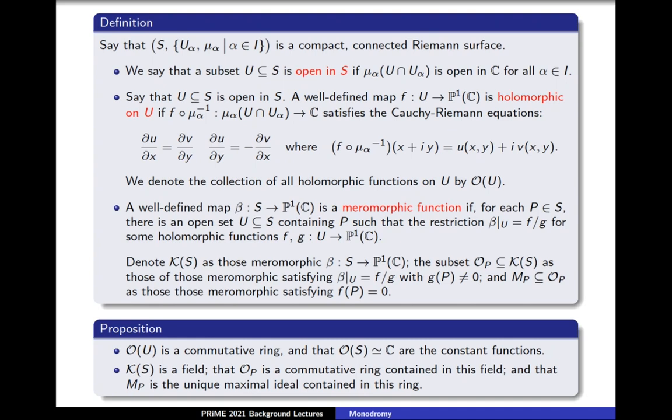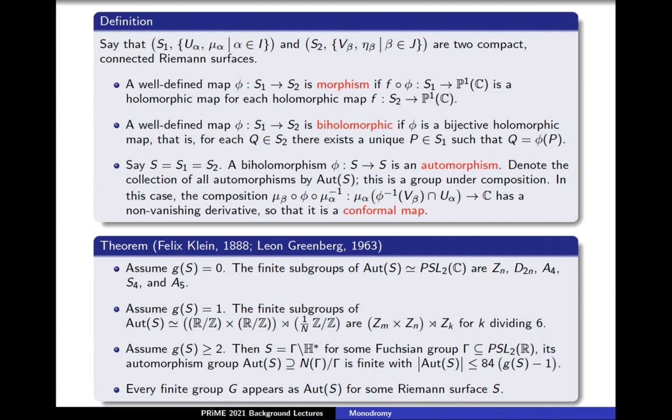Consider the following proposition. O(U) is a commutative ring, and O(S) is isomorphic to C, the constant functions. Next, K(S) is a field, O_P is a commutative ring contained in this field, and M_P is the unique maximal ideal contained in this ring.